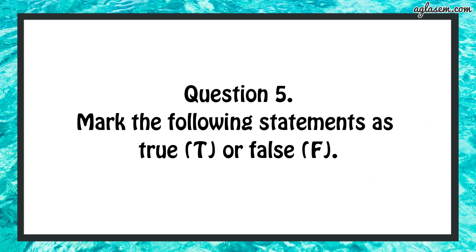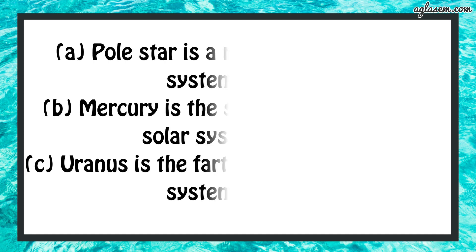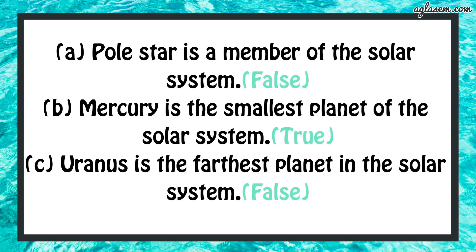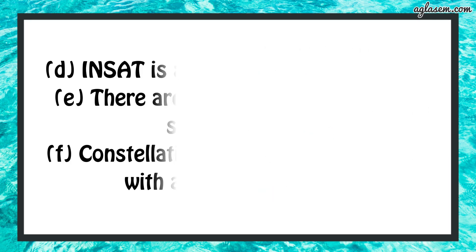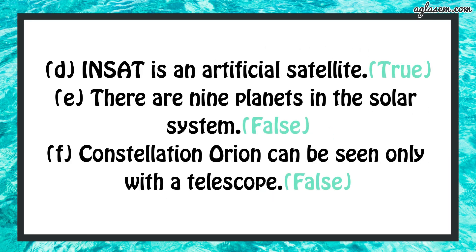Question number 5: mark the following sentences as true or false. Pole star is a member of the solar system - False. Mercury is the smallest planet of the solar system - True. Uranus is the farthest planet in the solar system - False. INSAT is an artificial satellite - True. There are 9 planets in the solar system - False. Constellation Orion can be seen only with a telescope - False.